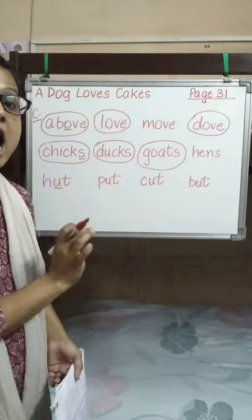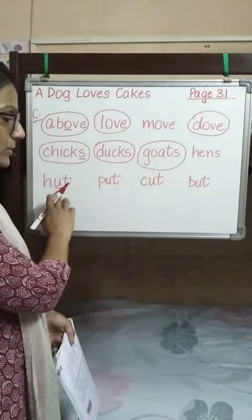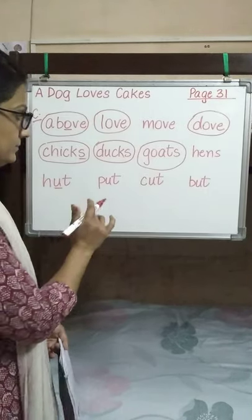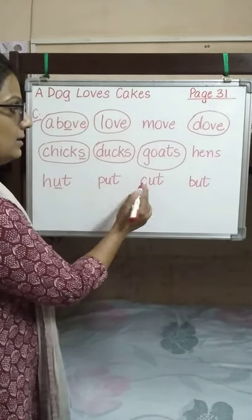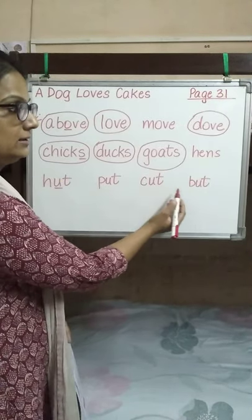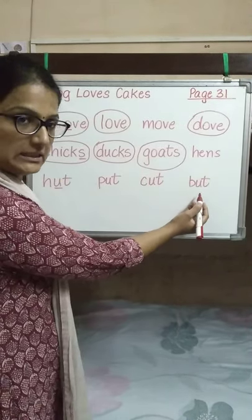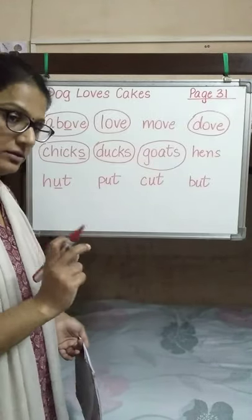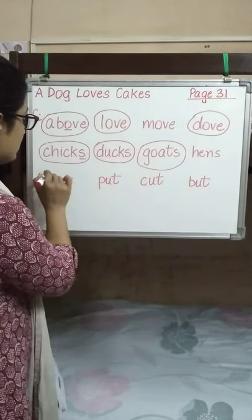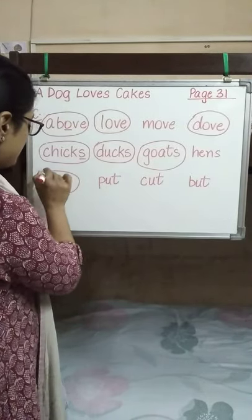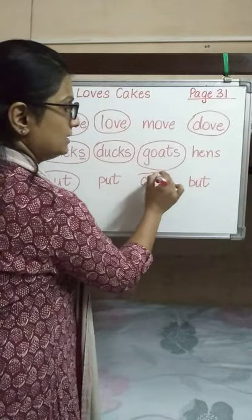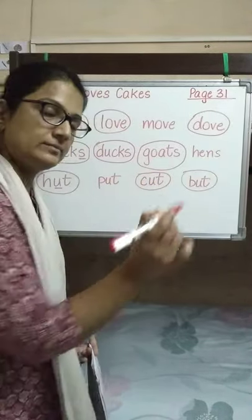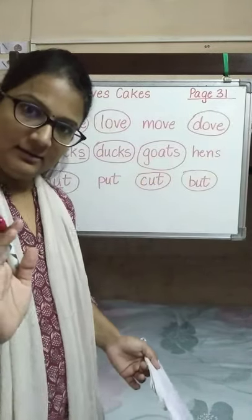Next set: 'hut' — U is underlined. Similar sounding words are: cut and but. We don't say 'put' the same way — it sounds different. So we will be circling: hut, cut and but.